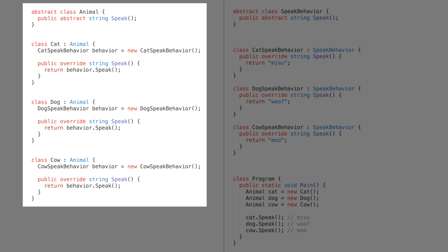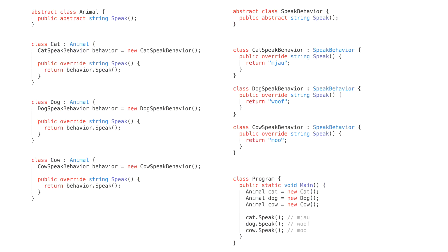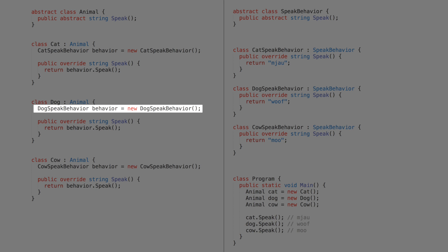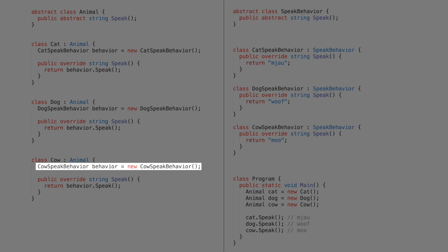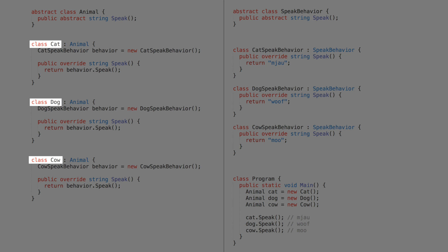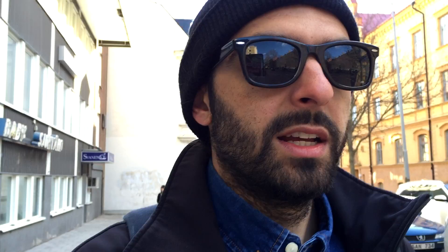This is fine, but we are potentially breaking dependency inversion. If Cat instantiates CatSpeakingBehavior, Dog instantiates DogSpeakingBehavior, and Cow instantiates CowSpeakingBehavior, then we are breaking the dependency inversion principle — because the high-level module (Cat, Dog, Cow) is coupled to the low-level module (the speaking behavior classes). Dependency inversion says you should invert these dependencies so that both the high-level and low-level modules depend on abstractions.